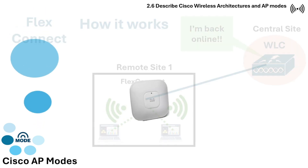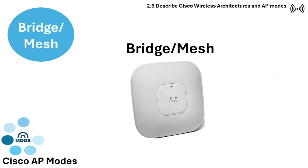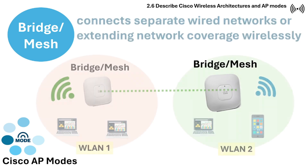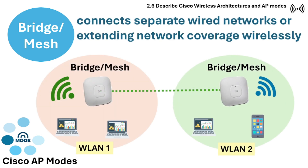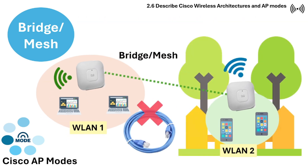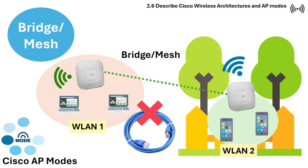Bridge or Mesh mode is used to create wireless bridges or mesh networks, connecting separate wired networks or extending network coverage wirelessly. This is typically used in outdoor or large spaces where cabling is not feasible.